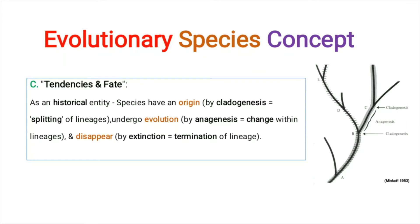The means by which a species can originate from ancestors are: first, cladogenesis — a single ancestral lineage splits into two lineages. Second, anogenesis — there are changes within a single lineage, meaning that evolution is occurring within that lineage.